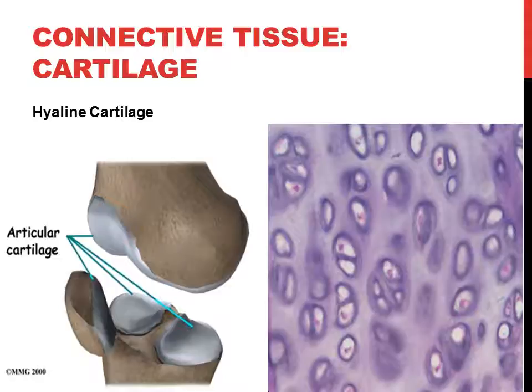Hyaline cartilage has a glassy, white-blue appearance. We want it to be glassy and smooth so friction and heat aren't created when joints move. It resists compression, which is why it is our articular cartilage at all articular surfaces and bone ends. It also makes up the attachments of our ribs to our sternum and is found in a few other places, but the big deal is its role as articular cartilage due to its ability to resist compression, resist tension, and be very smooth.